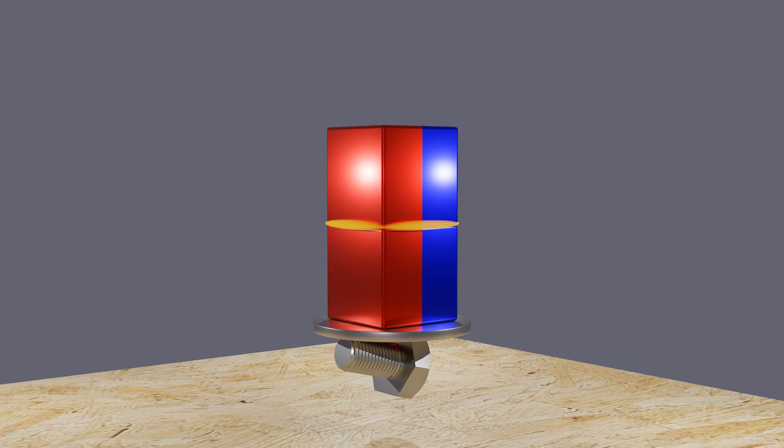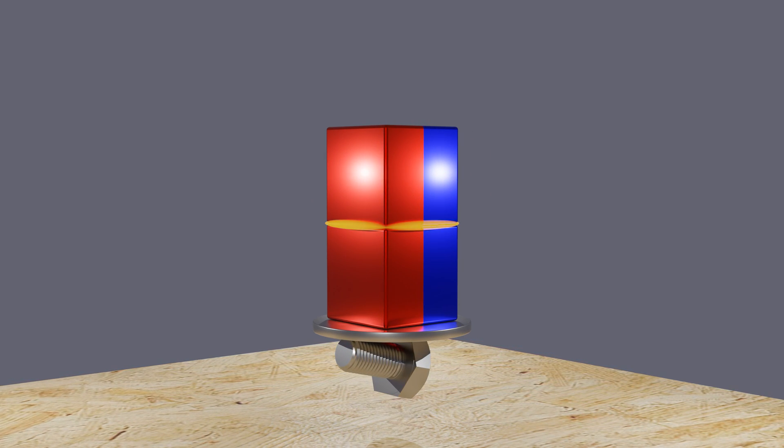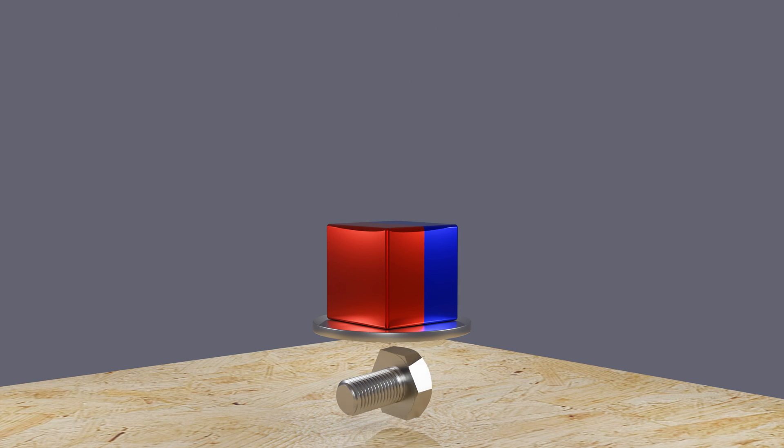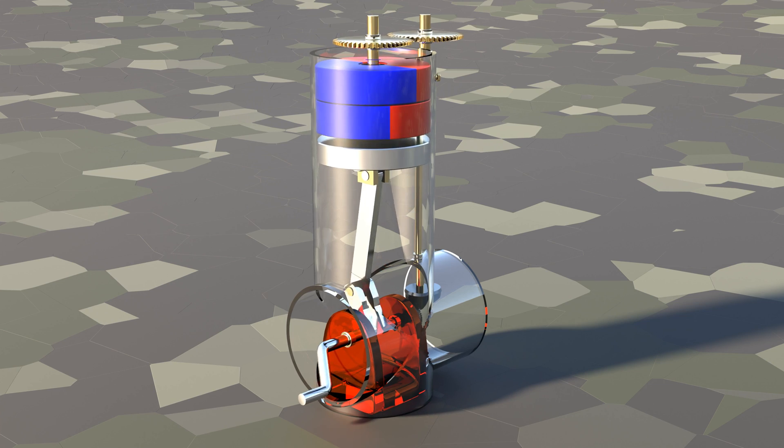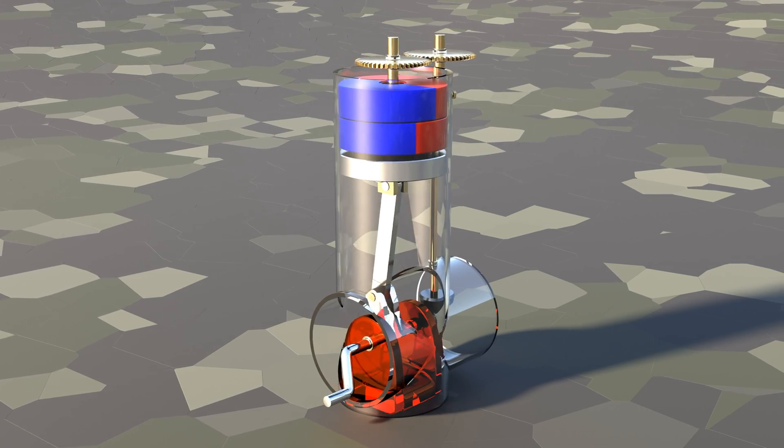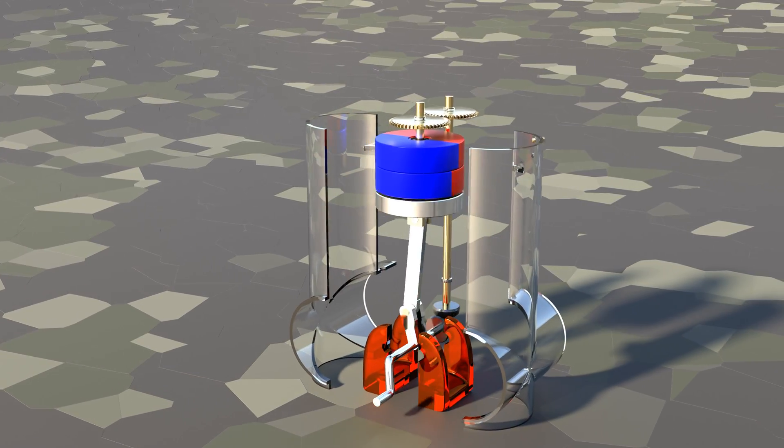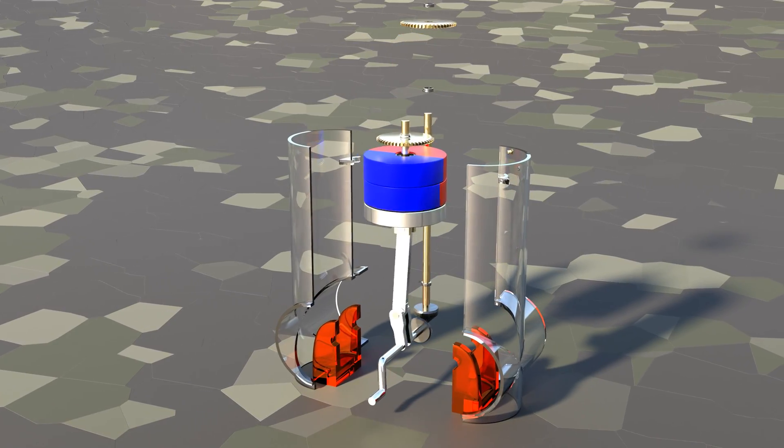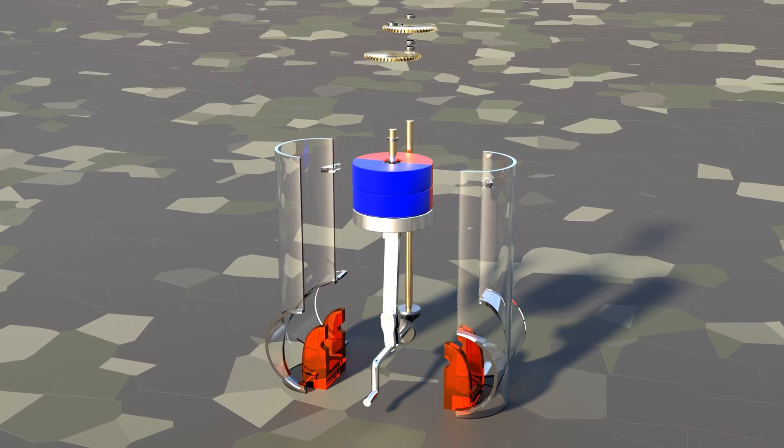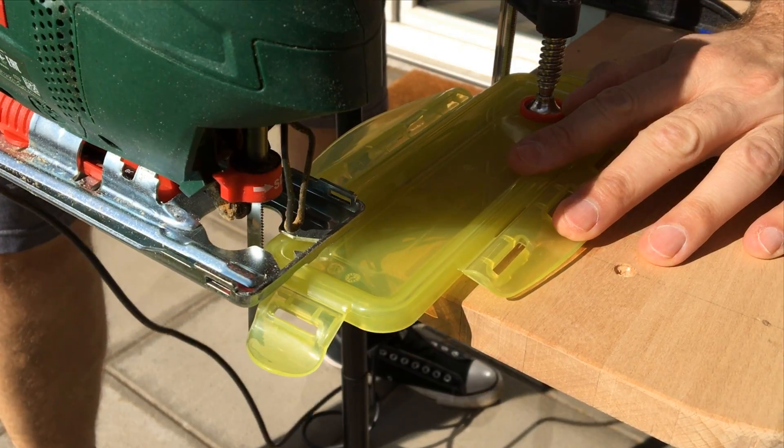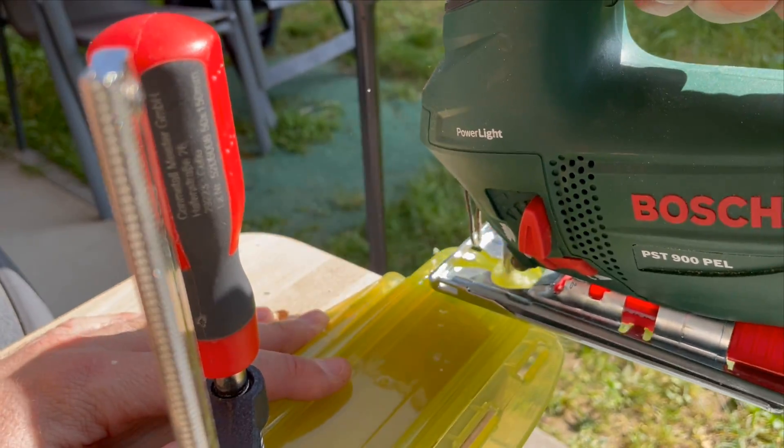The theory should be verified by an experiment. This is where I come into play. In the video, the inventor also omits the metal disc between the magnets and the metal cylinder that is lifted. So it has to be tested whether the motor could also run without the disc. So, I'll build something quickly.